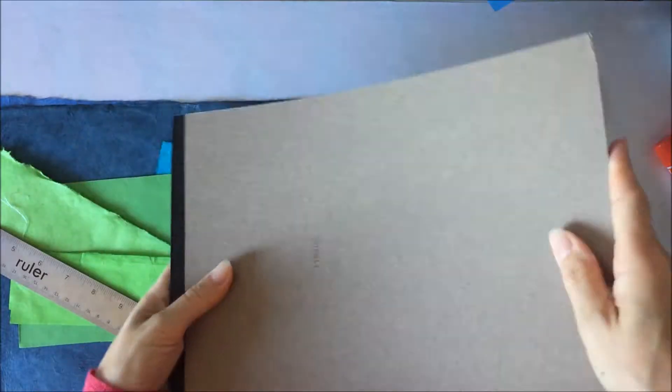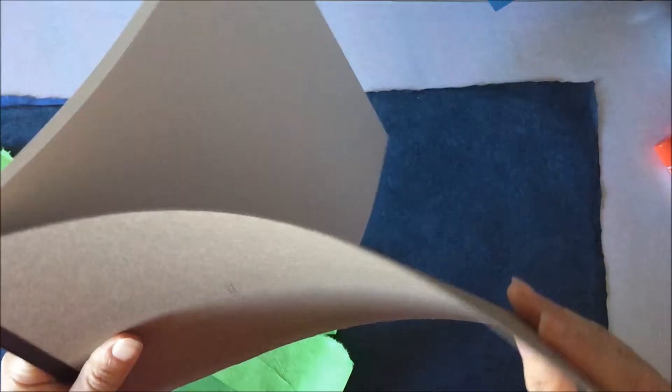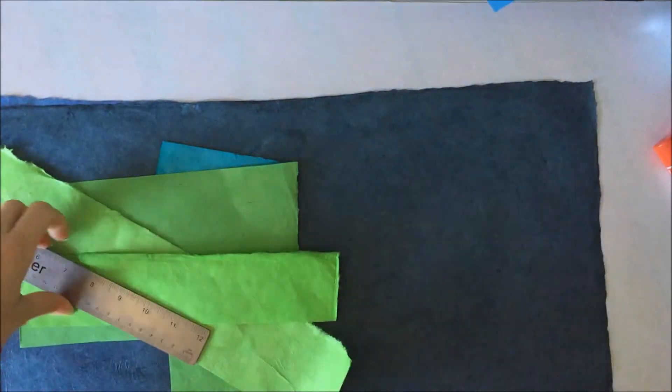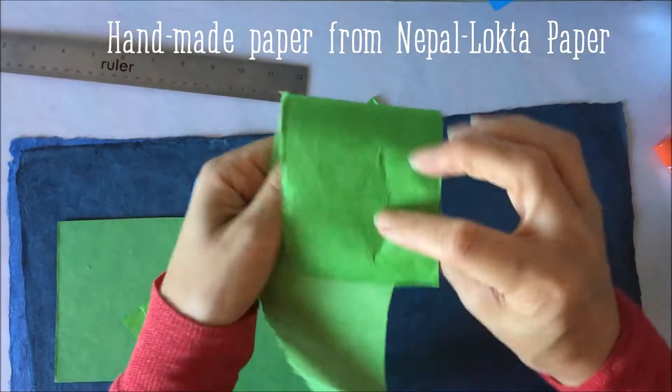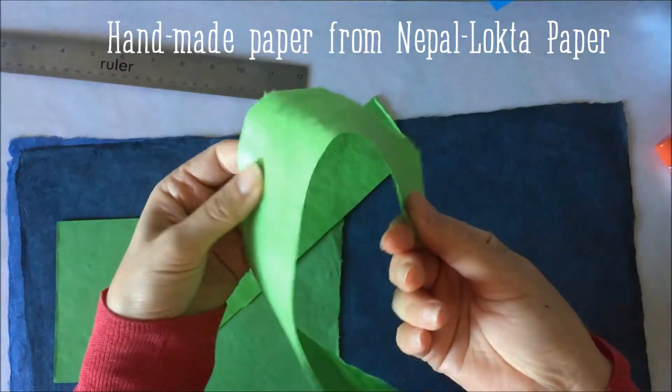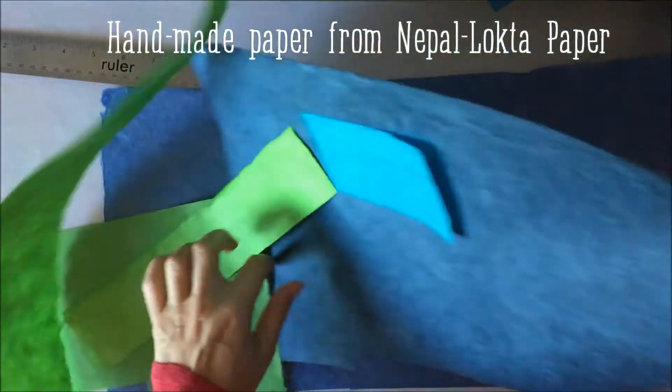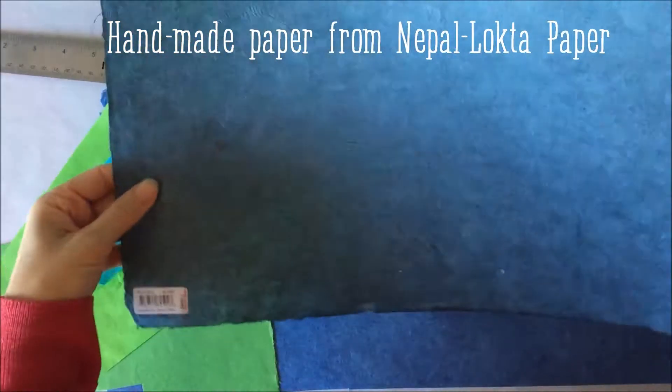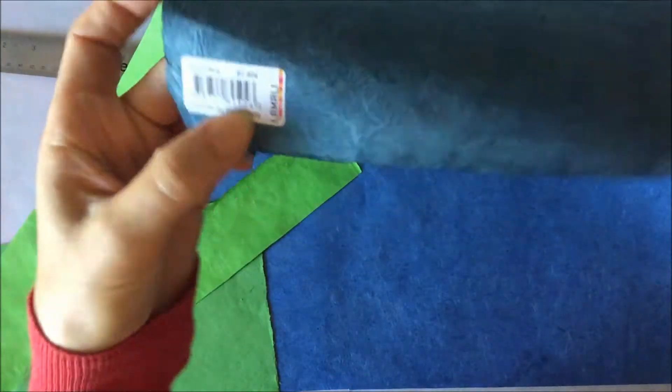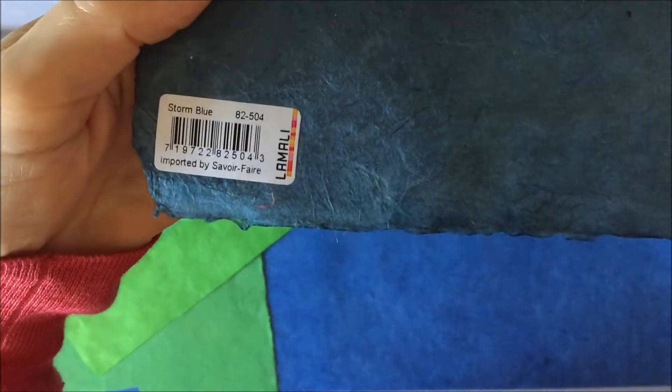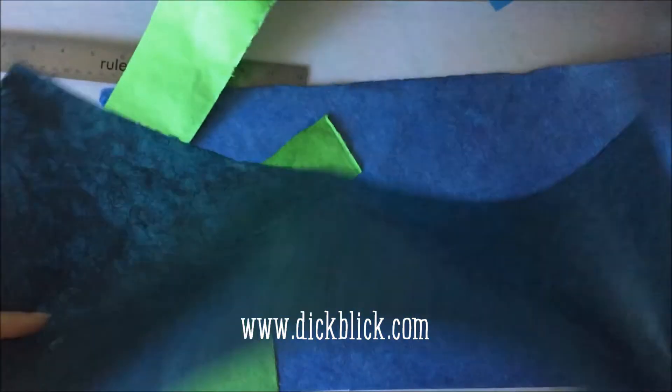You'll also need some chipboard, which I just use from the back of a drawing paper pad or even a watercolor paper pad. And then you'll need some Lokta paper. This is handmade paper from Nepal. It's very flexible, very strong, comes in beautiful, vibrant colors, and it's perfect for covering books or boxes because it doesn't crack or tear.